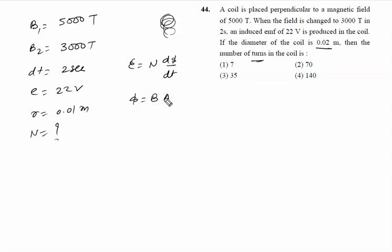Theta is 90 degrees, so cos θ is 1. Area is not changing, B is changing. So the value of dΦ will be area times dB, that is the change in magnetic field. We will write the value of dΦ here.